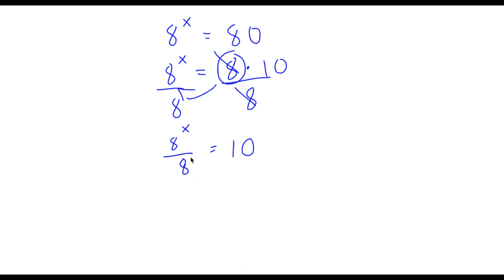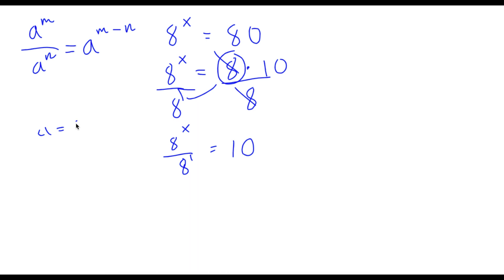Now this 8 here is the same thing as 8 to the power of 1. And if we have something in the form a to the power of m divided by a to the power of n, this is equal to a to the power of m minus n. So 8 to the power of x divided by 8 to the power of 1 — we can think of a as 8, x as m, and 1 as n. So if we plug this in, we get 8 to the power of x minus 1, and this is equal to 10.